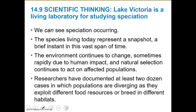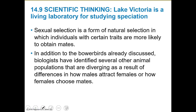We can see speciation occurring. The species living today represent a snapshot, a brief instance. The environment continues to change — sometimes rapidly due to human impact — and natural selection continues to act on affected populations. Researchers have documented at least two dozen cases in which populations are diverging as they exploit different food resources and breed in different habitats. The newts and salamanders are a great example of speciation that's kind of happening right now, with a great visual coming.